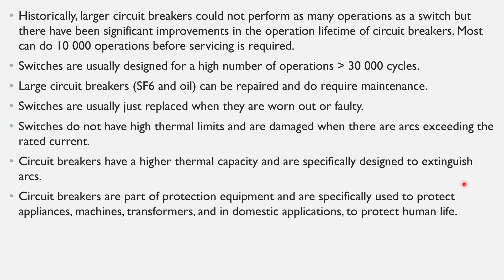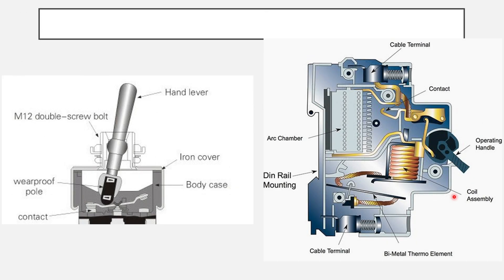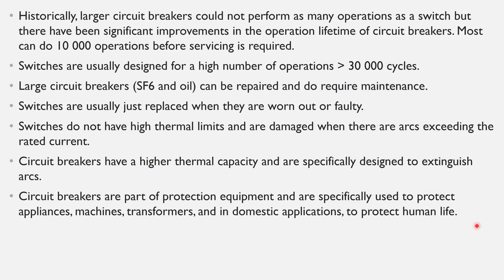Circuit breakers are designed to have a higher thermal capacity and are specifically designed to extinguish arcs. If you look at the cross-sectional view of a switch and a circuit breaker, the switch is simply contacts that rock open or closed, or two contacts pushed together. The circuit breaker is more elaborate and has an entire chamber just to deal with the arc.